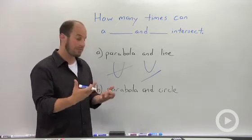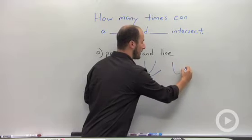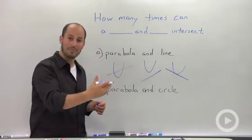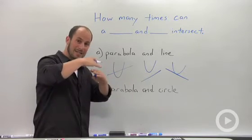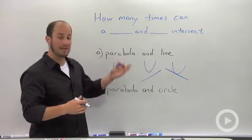But there's also one other way that this could work, and that is if the line just touched at one point. So if we had the parabola and it just went at one point, this is called point of tangency. Basically a line that just touches at one point is a line that's tangent.